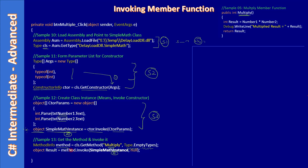Invoking the method is simply like calling obj.Multiply() — that's what we are doing here via reflection: methodInfo.Invoke(simpleMathInstance, null). The second argument is null because Multiply takes no parameters. But if it accepted arguments, say two strings, you would construct the argument type array — new Type[] { typeof(string), typeof(string) } — and supply the value array as the second parameter. The method returns a result which we add to our multiline text box.